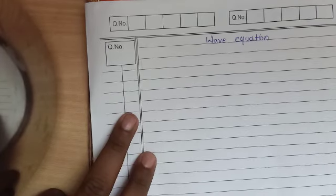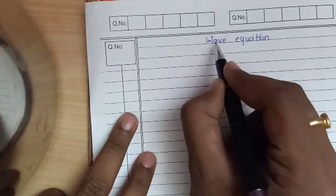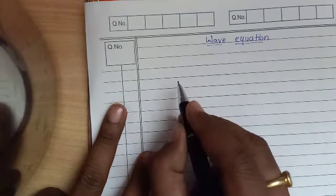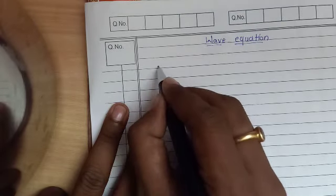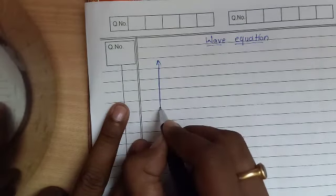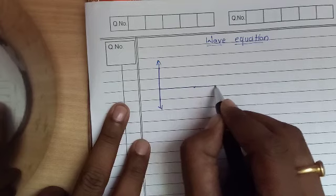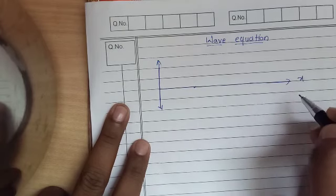We discuss the formation of waves and how the wave equation gets formed. Today's topic is the development of a wave equation. We consider this is a y-axis and we draw this is an x-axis.